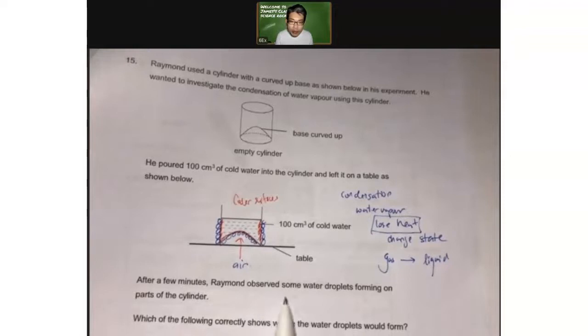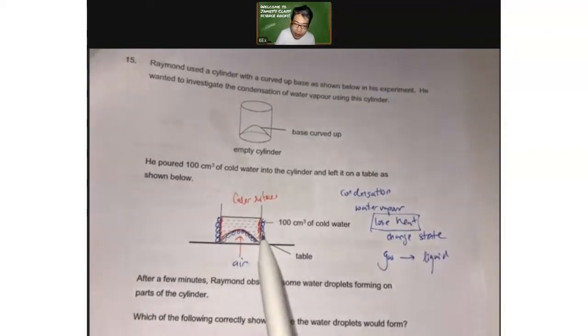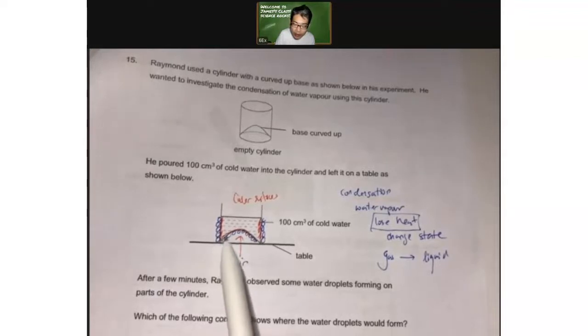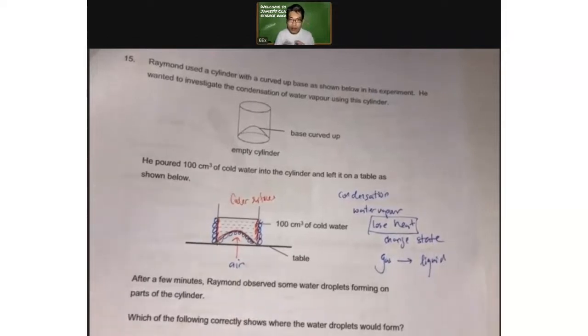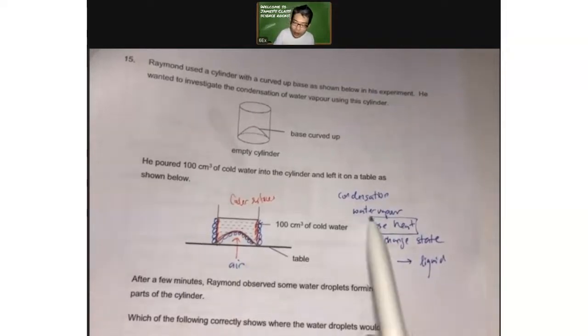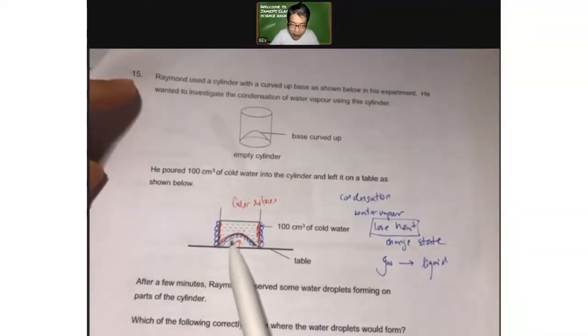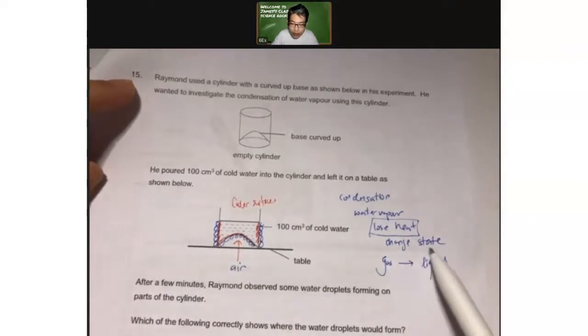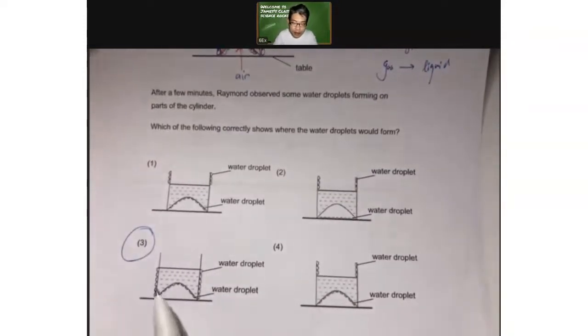So if there's cold water inside here, then of course the surface in contact with the cold water will be the cooler surface. So the red color portion will all be these cooler surfaces, and it is on these cooler surfaces that the water vapor will lose heat, change state from gas to liquid. And that is the idea of condensation here. Now after a few minutes, Raymond observed some water droplets forming on parts of the cylinder. Of course, on the sides here. But what about this curved bottom? If it's curved up, it means that this bottom part, this white color part is actually air. And air is made up of different kinds of gases, including water vapor. That is why the water vapor that's in this curved part of the bottle will also touch the cooler surface of the bottle, lose heat, change state, and condense into liquid. So that's why the answer for this is number three.